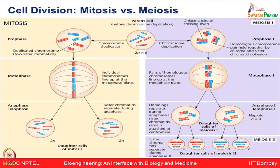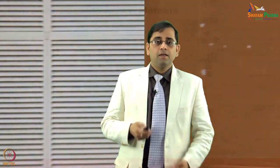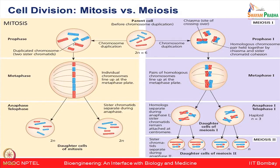In mitosis, chromosome duplication happens; in prophase the condensed chromatids appear — 3 blue and 3 red. These duplicated chromosomes form two sister chromatids. After prometaphase and metaphase, individual chromosomes line up at the metaphase plate, equidistant from spindle poles. In anaphase, division happens and two daughter cells are produced having 2N — exactly the same chromosome count as the starting cell.